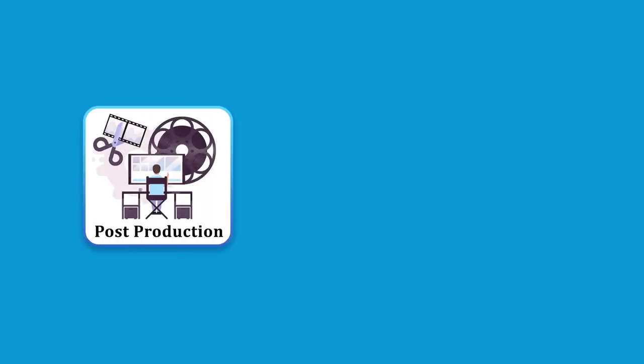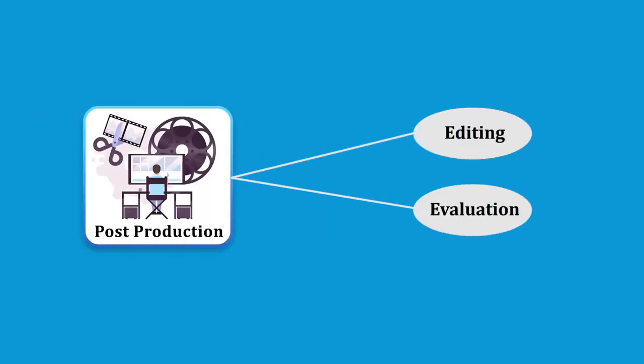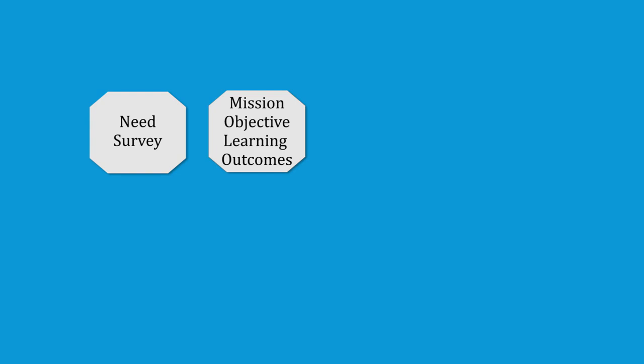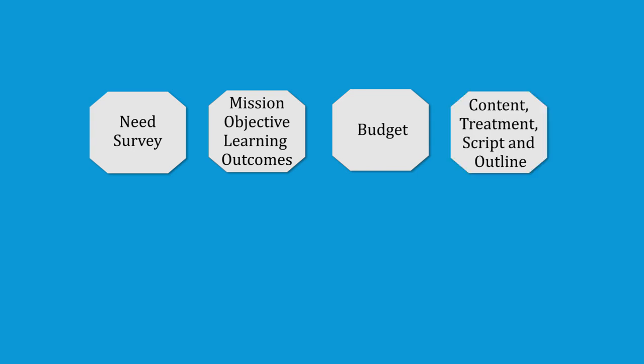In pre-production, we have two phases: planning and scripting. Recording is in the production stage, and in post-production we have editing and evaluation, also called reviewing of the e-tutorial. In pre-production, the first step is planning. When planning an e-tutorial, we need to do a needs survey, be clear about the objectives, the mission or learning outcomes, and the budget — how much you can spend on making that particular e-tutorial. Then there is content, treatment, script, and production planning.